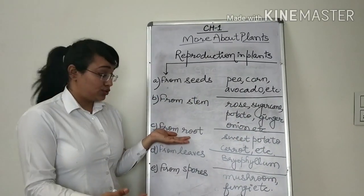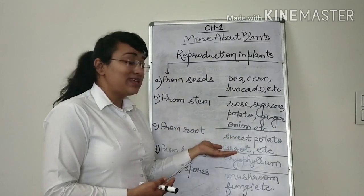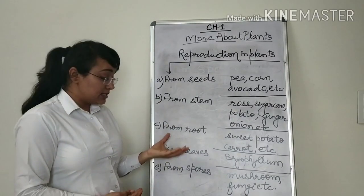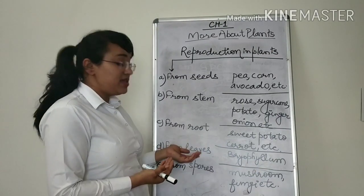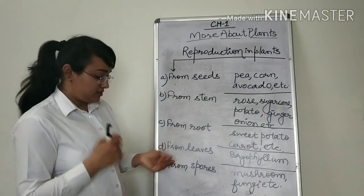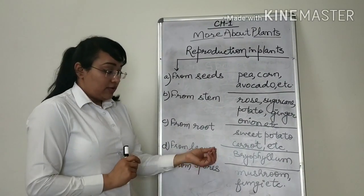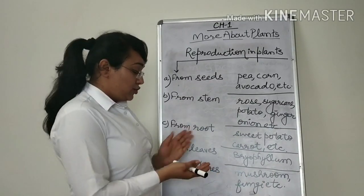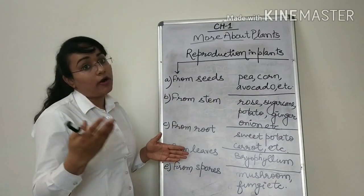Next way is from the root. Examples of these are sweet potatoes, carrots, etc. Another method of reproduction is using leaves. Bryophyllum, as explained to you, is one of the examples through which reproduction can happen using the leaves. The last but not the least is from the spores. Examples of the spores is mushroom and fungi and many more. Using these, we can reproduce more and more plants.